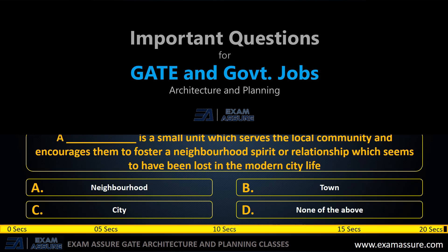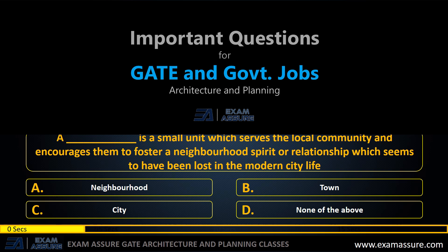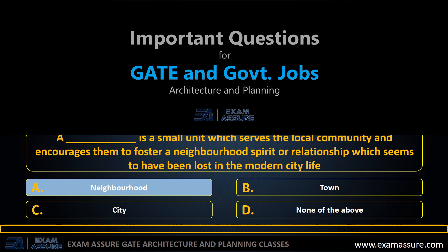Next question. What is a small unit which serves a local community and encourages them to foster a neighborhood spirit or a relationship that seems to have been lost in modern city life? Option A: Neighborhood. Option B: Town. Option C: City. Option D: None of the above. The correct answer is: Neighborhood.